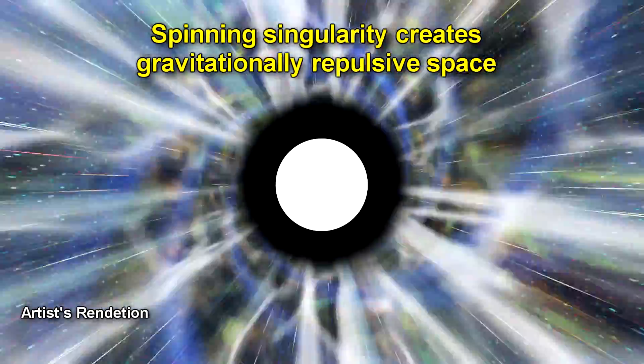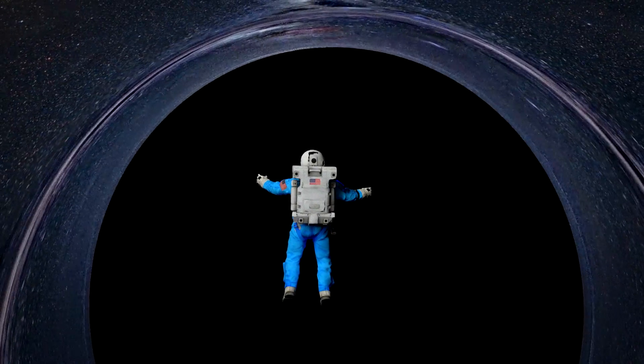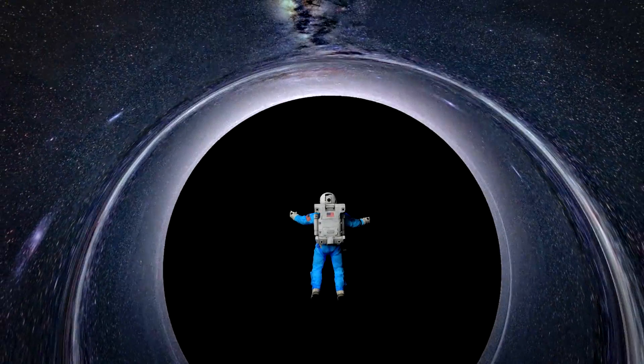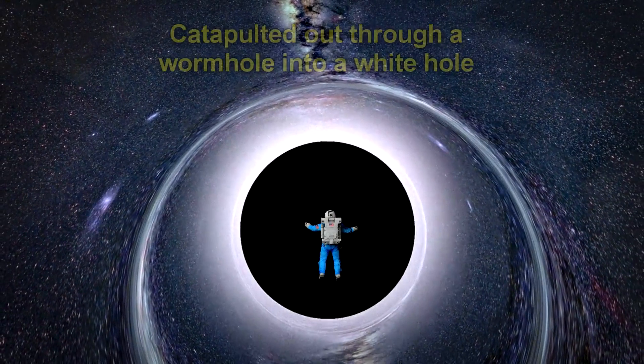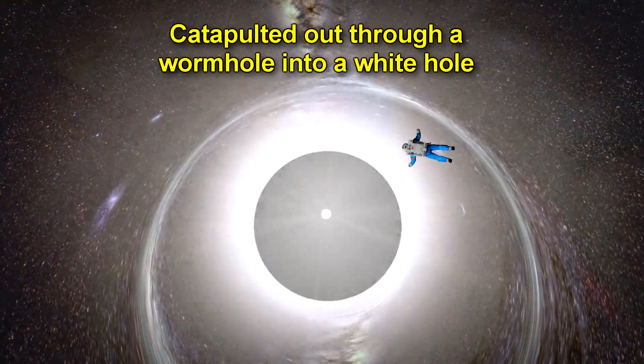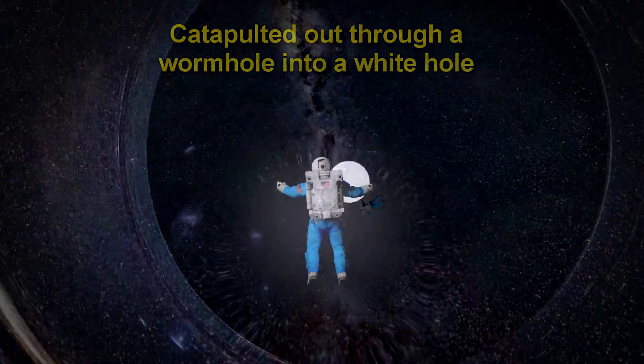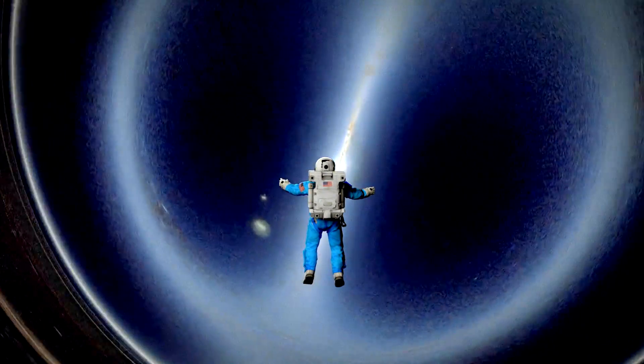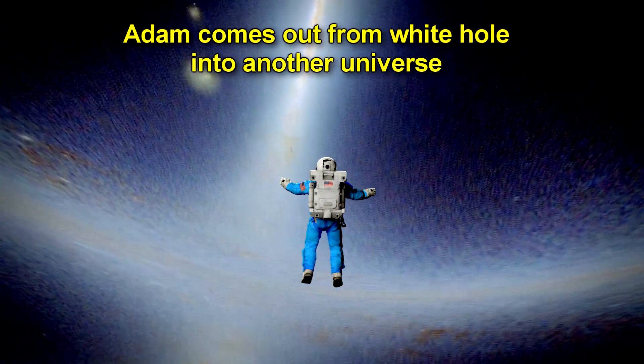Once you hit this inner horizon, you would see an infinitely bright point of light which is an image of the outside universe reflected by the repulsive singularity. Then you'd be catapulted out and through a white hole. What's a white hole? It's like a black hole reversed in time. Nothing goes in, everything comes out. This would mean that if Adam's suit was strong enough, he would be catapulted to another universe.